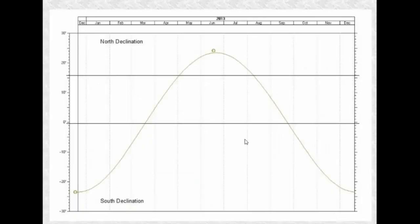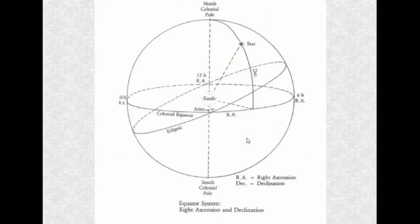Here's an example of symmetry in astrology: declination. Declination is the distance north or south of the celestial equator. Let me go to the next slide — this is a diagram of the celestial sphere.